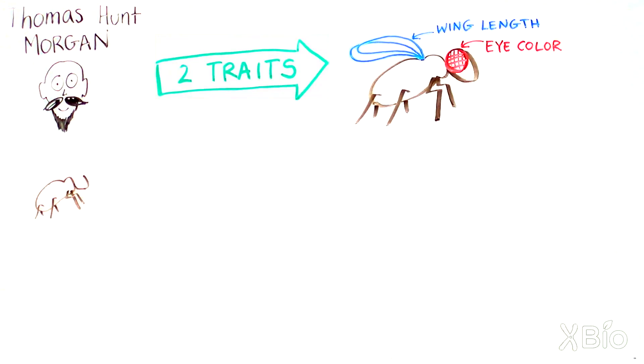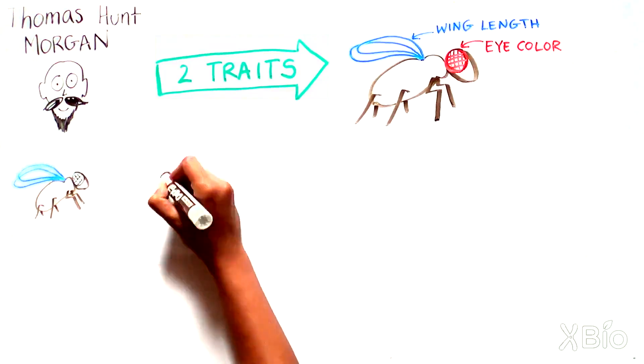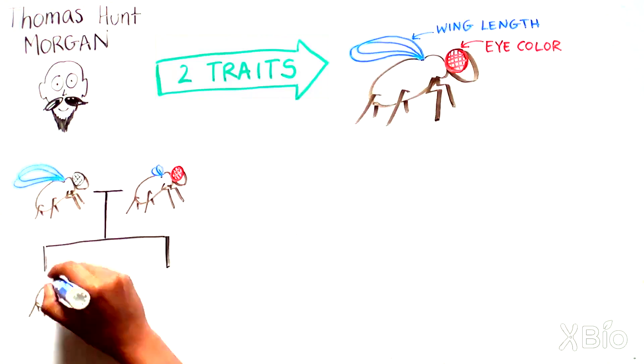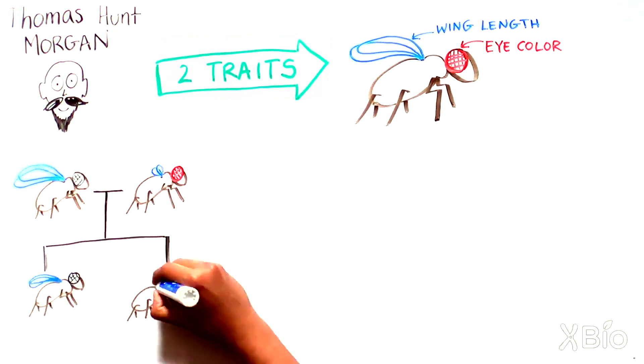If he bred a white-eyed, long-winged fly with a red-eyed, short-winged fly, the offspring almost always resembled one of the parents. They were either white-long or red-short.